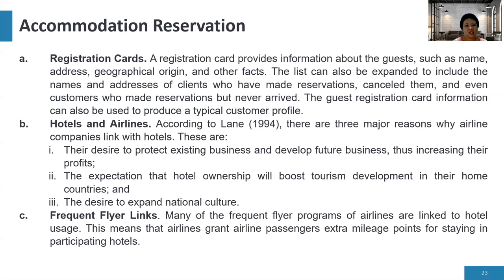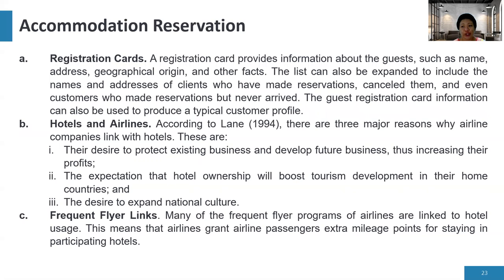For accommodation reservation, a registration card provides information about the guests such as name, address, geographical region, and other facts. The list can include names and addresses of clients who made reservations, canceled them, or never arrived. This information can produce a typical customer profile. In hotels with PMS, registration cards are in the system and upon guest arrival, they are printed and signed.